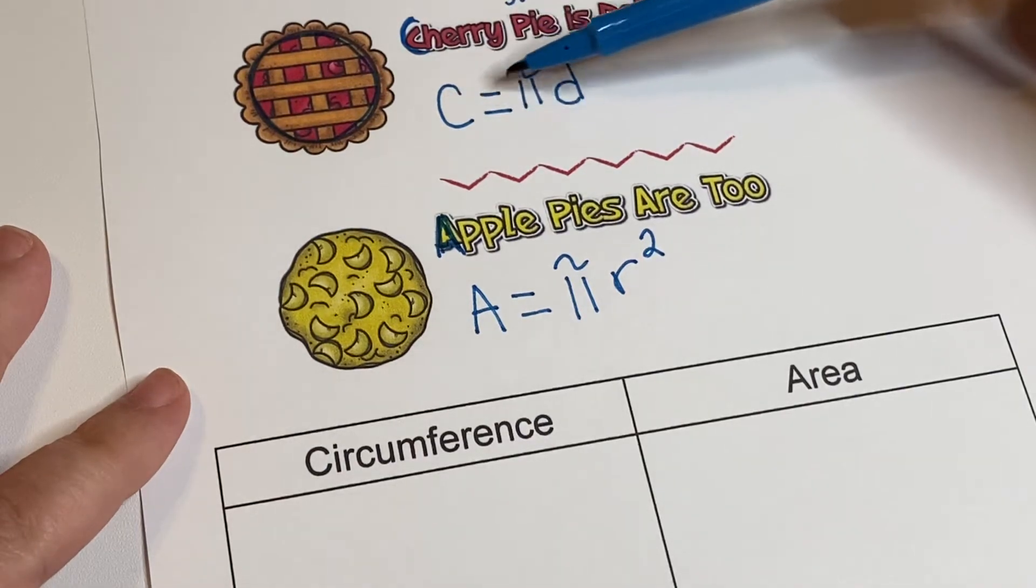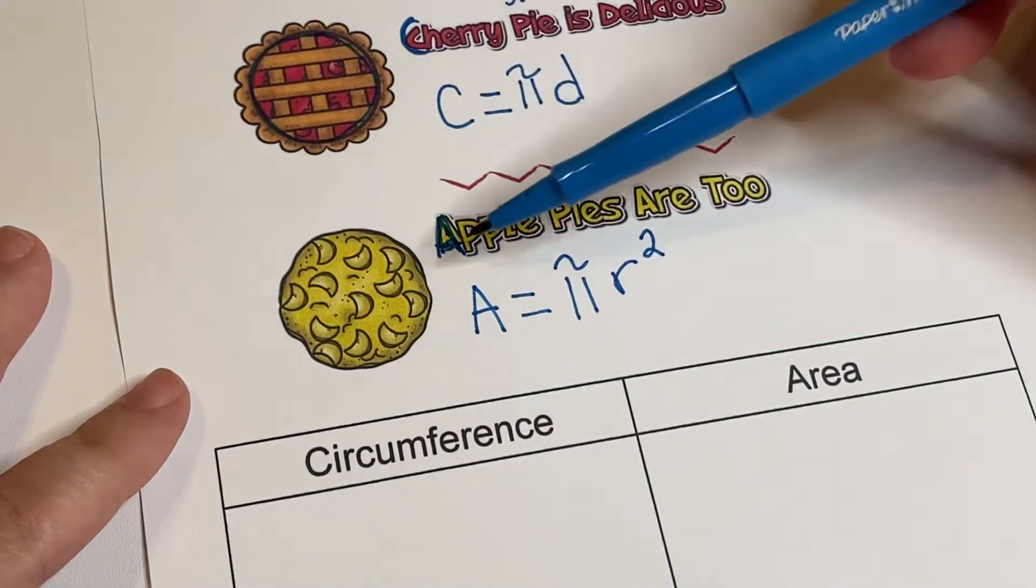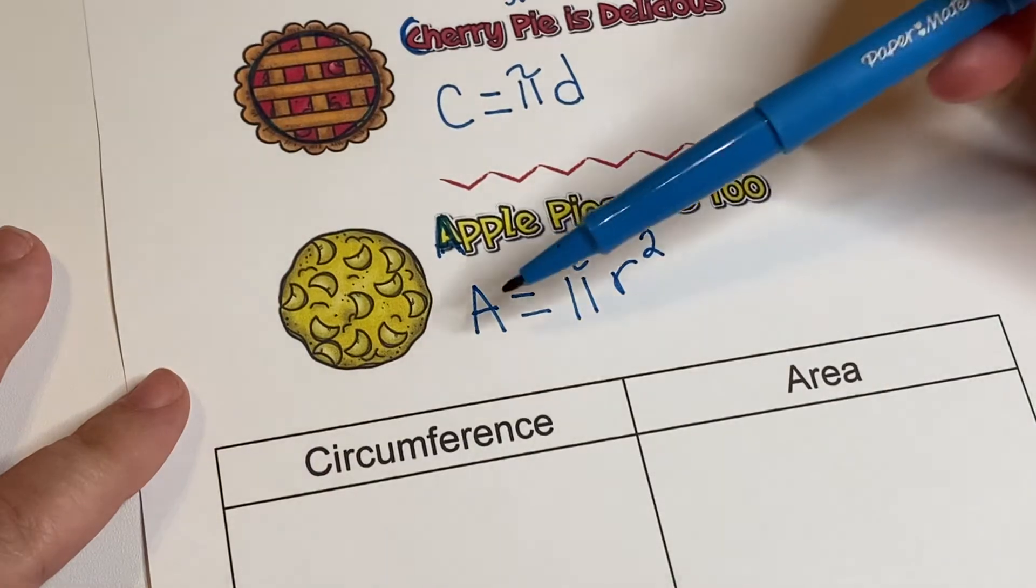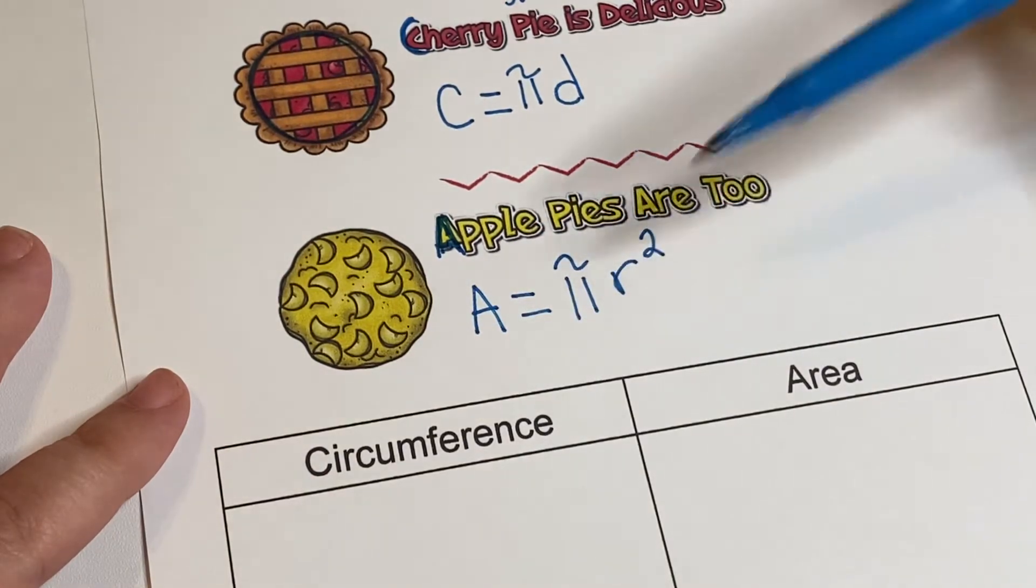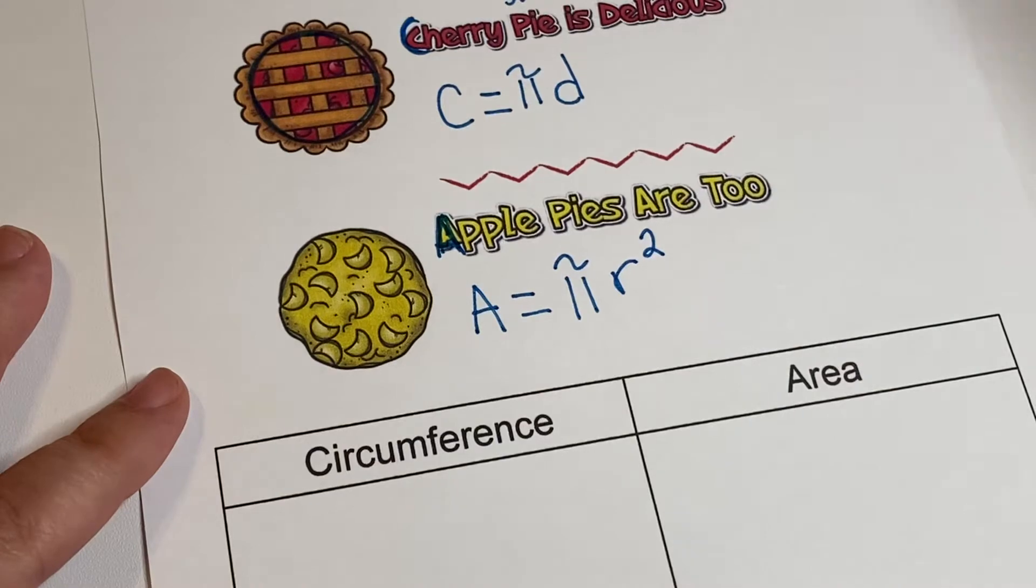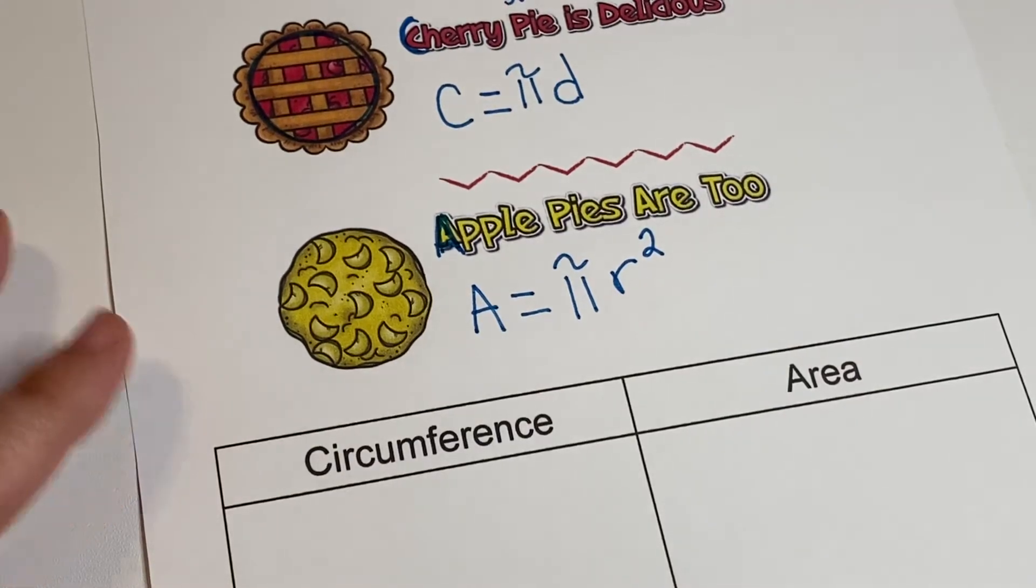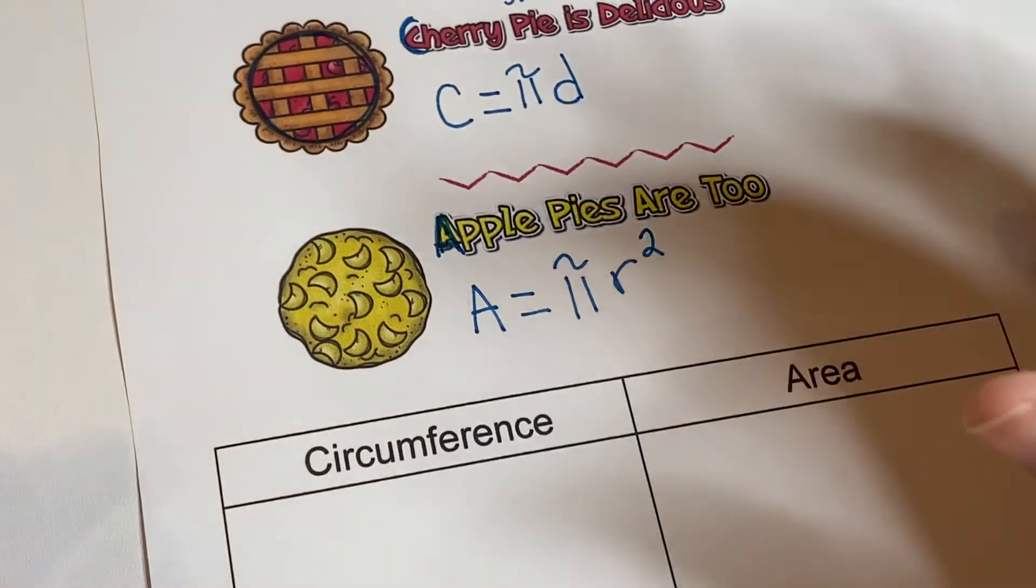So that's another thing to look at. But cherry pie is delicious, C equals πd. Apple pies are too, area equals πr². Now once again, it doesn't matter if you like cherry pie or apple pie - the thing is, this is just a way to remember how these formulas go.